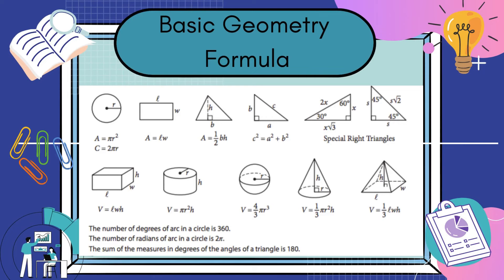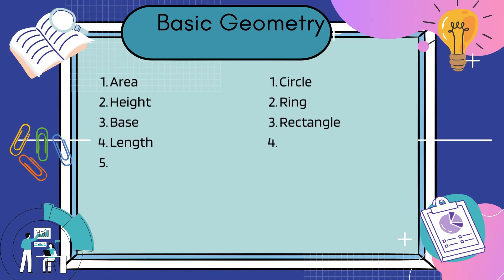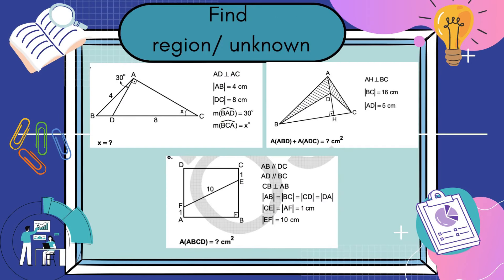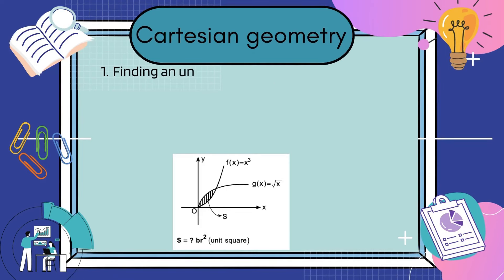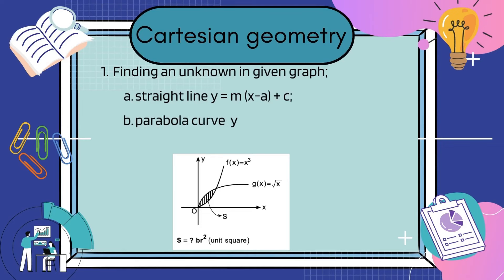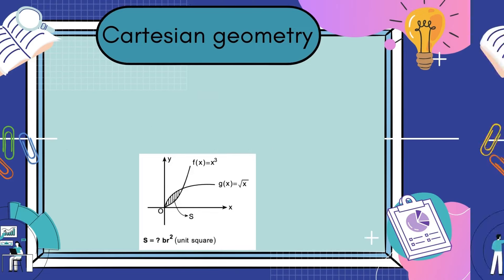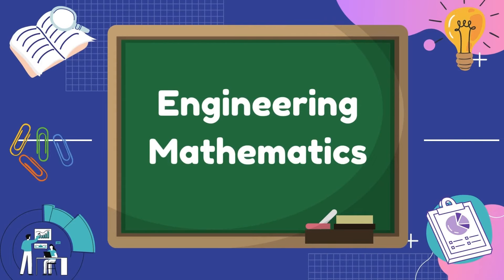The third part is geometry. You need to memorize all basic geometry formulas: area, height, base, length, angles, radius, similarity between triangles, and intersections between different geometric shapes. Make sure to remember the basic formulas first, then study more detail if you have time. Questions ask you to find the region of a given geometry shape, or find angle values and lengths. Cartesian geometry is also included — given an initial and final point based on a straight line, parabola, or hyperbola — you need to find intersection points or the region.